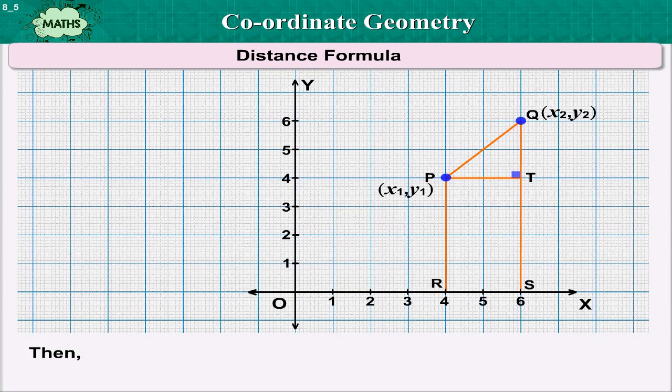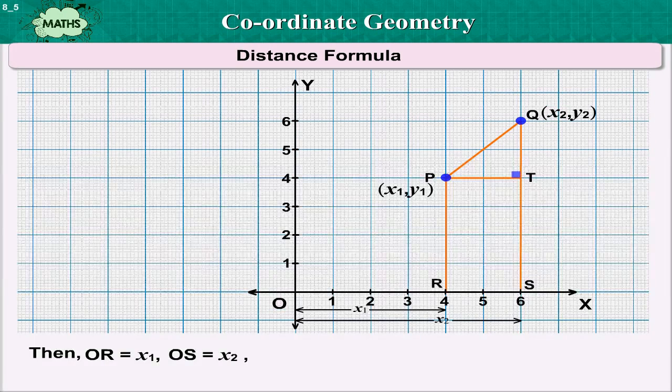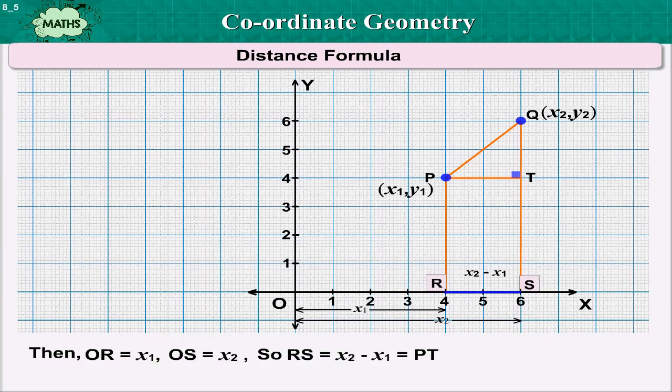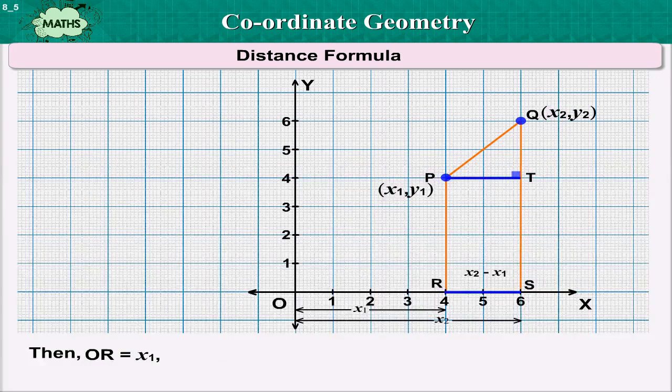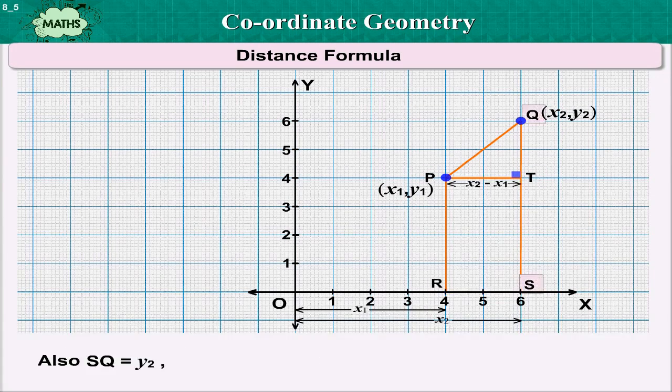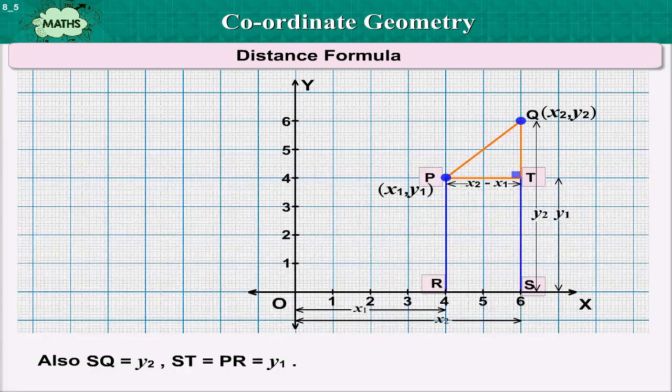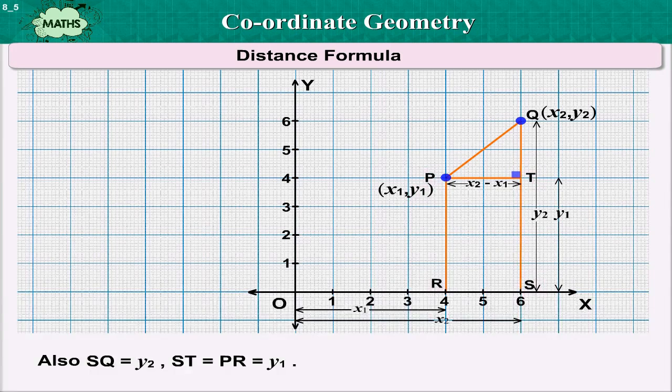Then, OR is equal to x1. OS is equal to x2. So, RS is equal to x2 minus x1 that equals to PT. Also, SQ is equal to y2. ST is equal to PR that equals to y1. So, QT is equal to y2 minus y1.